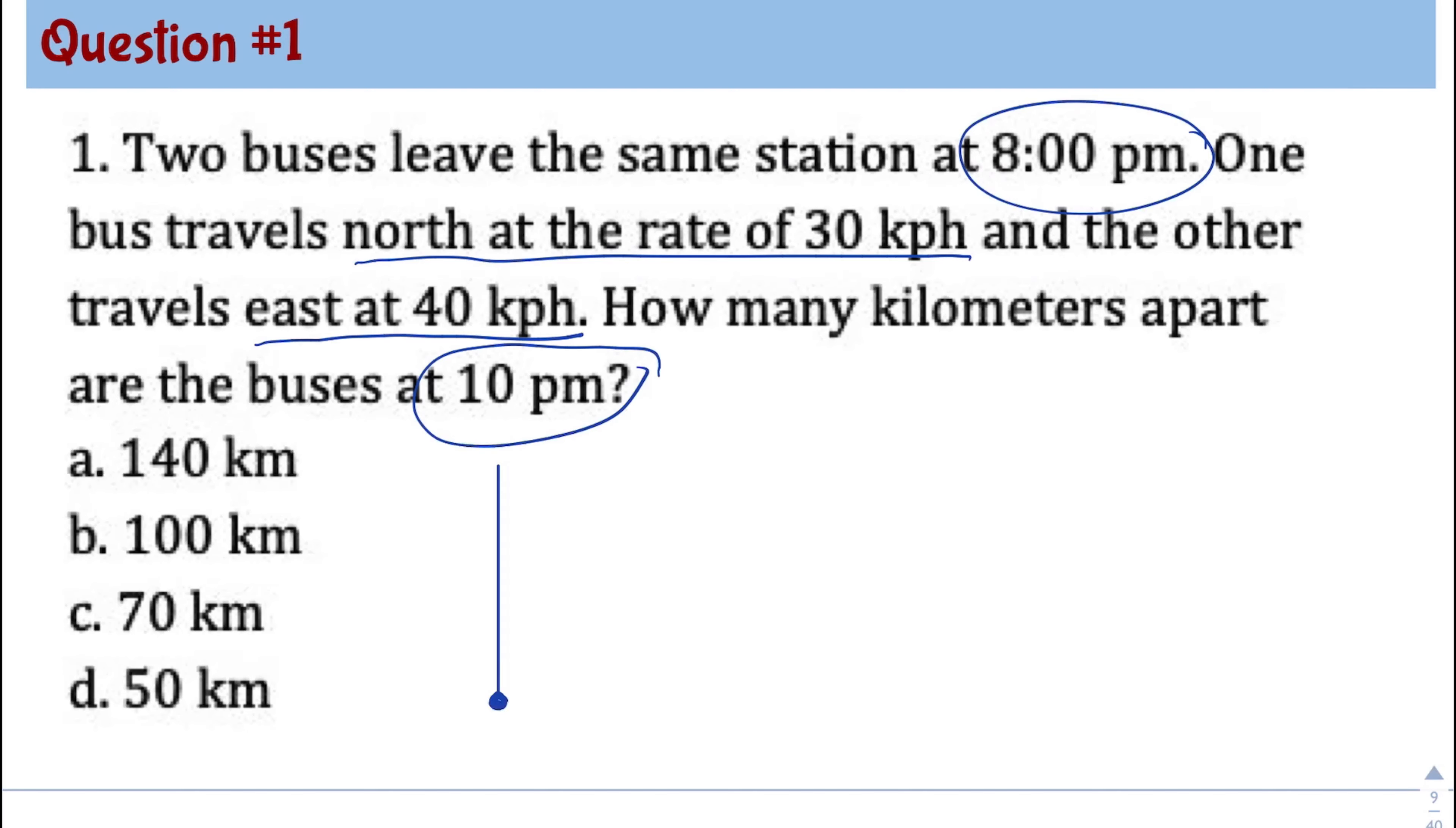And one bus travels north at 30 kilometers per hour. So in two hours, what's the distance traveled by bus number one? 60 kilometers, right? Because we need to do 30 times two hours. Now, for bus number two, the distance will be how many kilometers? It's traveling at 40 kilometers per hour. 80 kilometers, right? Because we need to multiply 40 times two. So this is 80 kilometers.